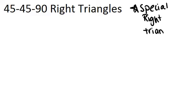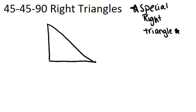They're named by their angles. A 45-45-90 right triangle has angles of 45 degrees, 45 degrees, and 90 degrees. The 90-degree angle is our right angle, and the other two angles are each 45 degrees.